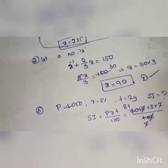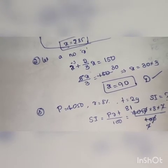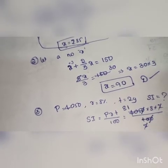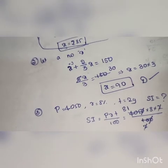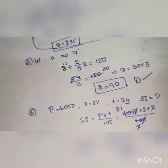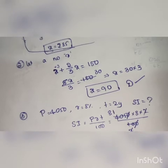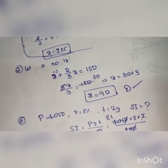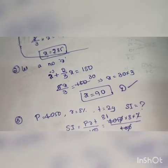Taking LCM as 3, we get 3x plus 2x, which is 5x. So 5x divided by 3 equals 150. 5x equals 450, x equals 30 times 3, which is 90. Option D is the right answer.